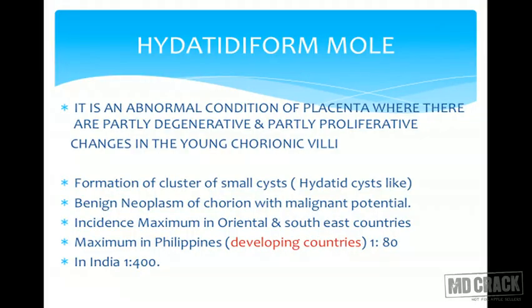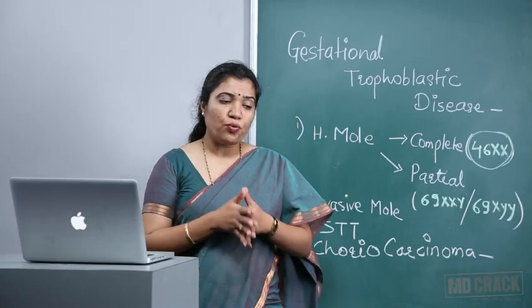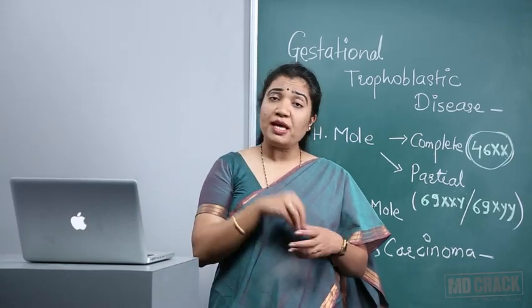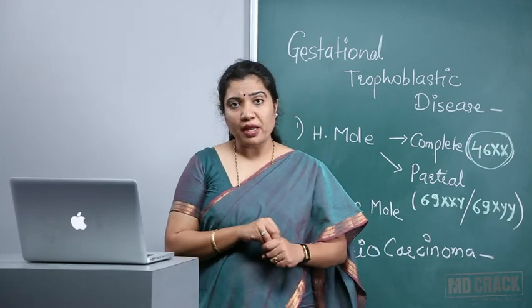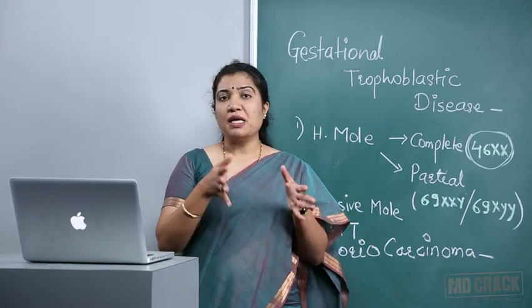Hydatidiform mole is an abnormal condition of the placenta where there are partially degenerative and partially proliferative changes in the young chorionic villi. There is formation of clusters of small, thin-walled hydatid-like cysts which contain fluid. It is a benign neoplasm of the chorion but has malignant potential.